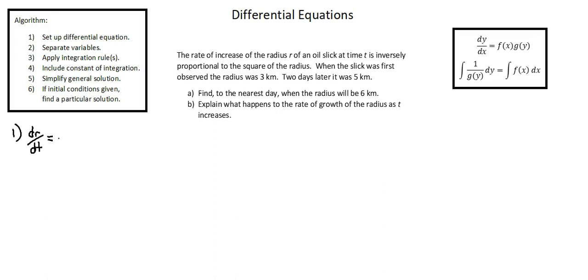We continue reading: is inversely proportional to the square of the radius. Here we have an inversely proportional relationship. So our setup is going to be our constant of proportionality, k, divided by the given metric. In this case, that is the square of the radius, k over r squared. If this were a directly proportional relationship, our setup would be k times r squared. In this case, we now have our differential equation.